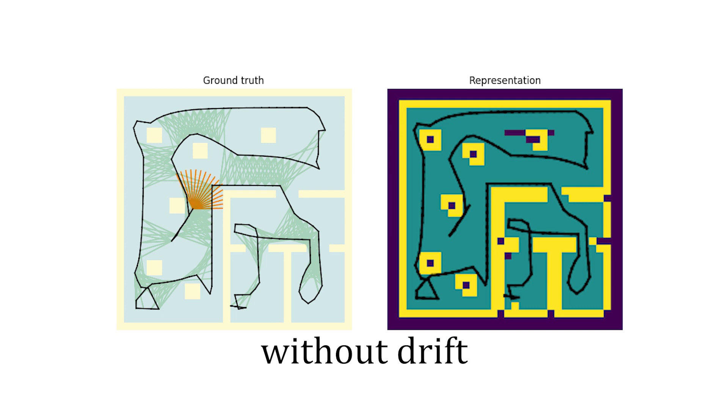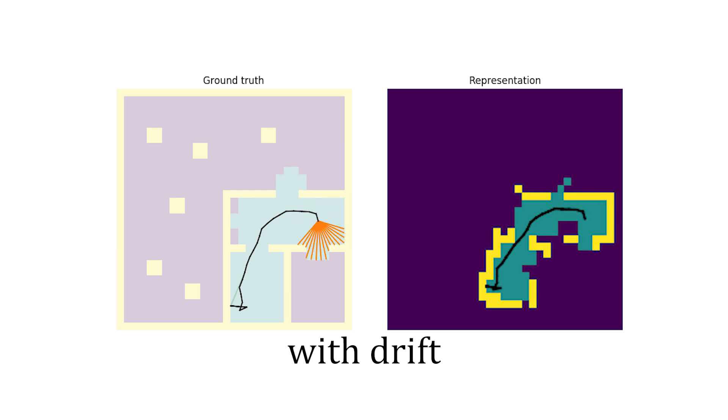It works fine as long as there is no drift in the state estimate. Unfortunately, real systems that are deployed in unknown environments tend to have drift. As soon as drift is introduced, the grid-based representation breaks down.